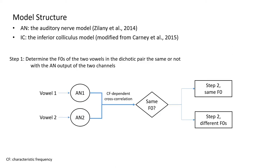We used a modeling approach to understand this phenomenon. The vowel identification model includes an auditory nerve model from Zilani et al. 2014 and an inferior colliculus model modified from Carney et al. 2015. The process takes two steps. The first step uses the auditory nerve model outputs of the two channels, one from each ear, to determine whether the fundamental frequencies of the two vowels in the dichotic pair are the same or not.